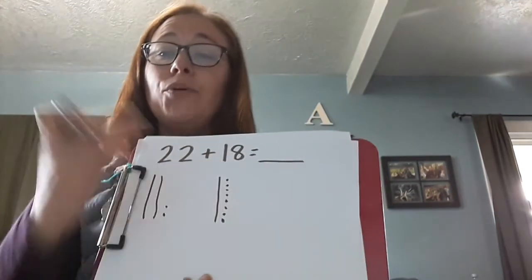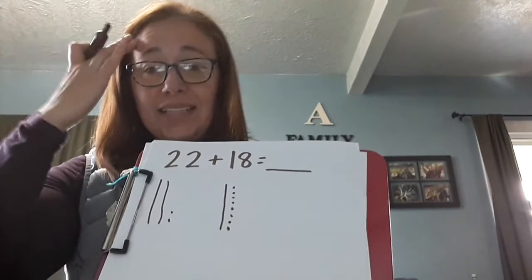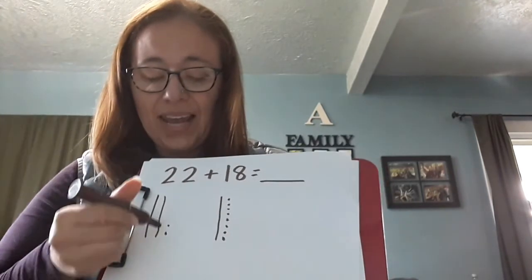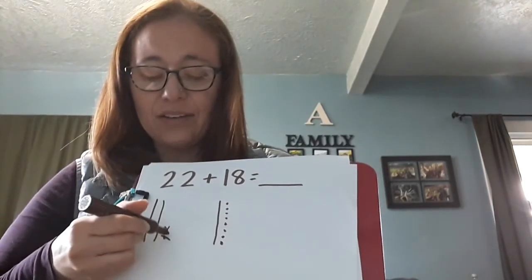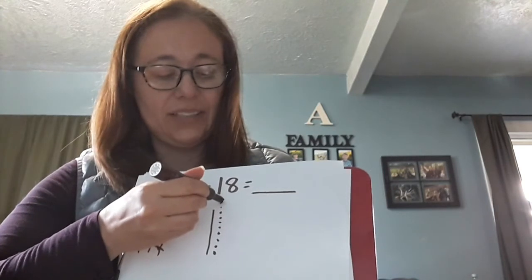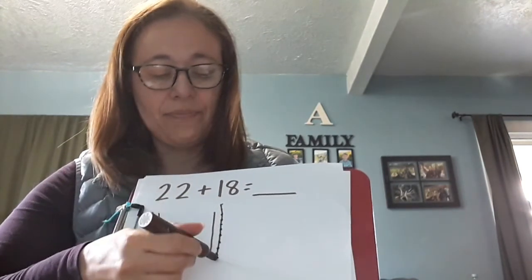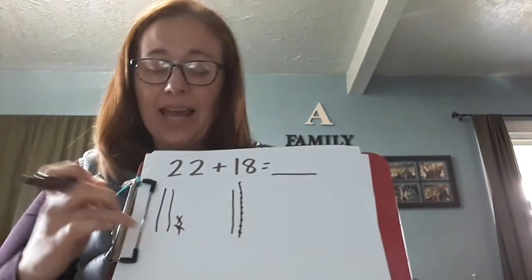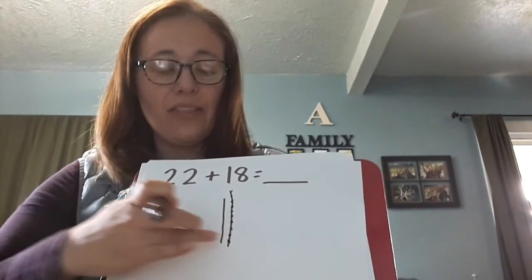But I see eight and two and I know that eight and two are partners to ten. So I know that I could cross these two out, add them over here, and this becomes another ten. Now that's more efficient when I add them up. I can say ten, twenty, thirty, forty.